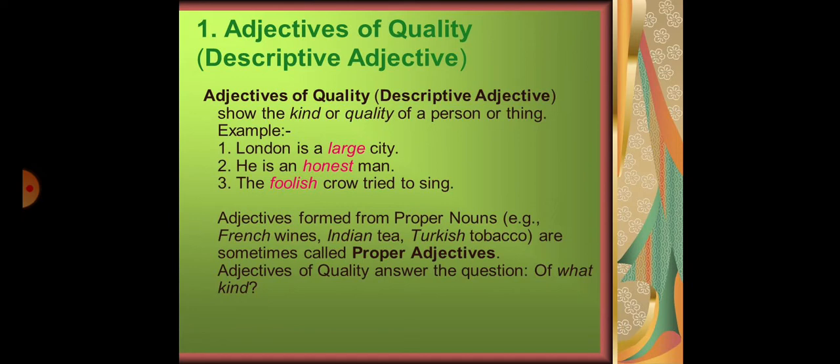Some more in the form of sentences. Aur yahan pe ek aur cheez aapko batati chalongi main, now pay attention. Look here: London is a large city. Large city kya hai? Yeh bhi noun hai. London is also a noun but yeh proper noun hai. And these nouns are described by this word 'large'. Theek hai, so yeh humara adjective hai. Isi tarah se, he is an honest man. Man ko describe kaun kar raha hai? Honest. Man is a noun and this is being described by the word honest, so we will say that this is our adjective.